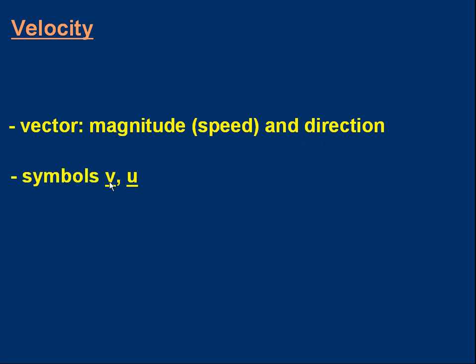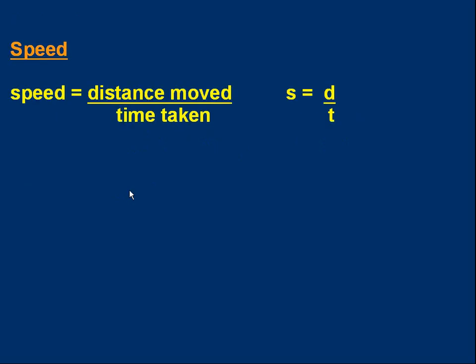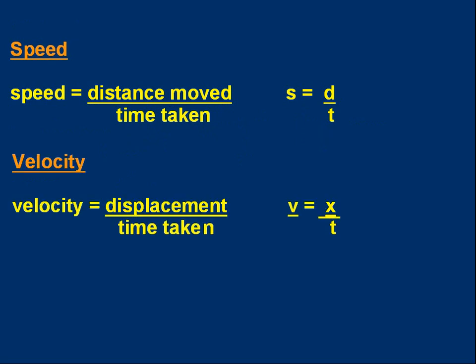We use different symbols for velocity. V is quite common but other letters are used as well — you'll often see U used. Here's a formula I hope you've seen many times before: speed is distance moved over time taken. Speed is distance over time. Can we have a similar formula to work out velocity? And the answer is yes. Instead of distance moved, we're going to use displacement. So velocity is displacement over the time taken. And if we're using x for displacement, we could write v = x over t.